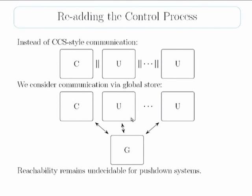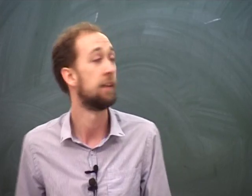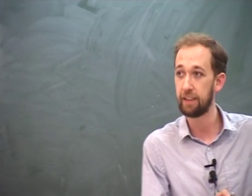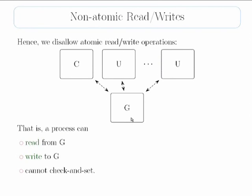I was interested in generalizing this further. In particular, the system loses the controller — so let's try to put the controller back. Also, the communication is by message passing, and I generally think in terms of global stores, so let's try putting a global store in too. At the moment, with a controller and users talking via a global store, we're still undecidable — because in the global store we can put locks. If someone wants to play the left tape, they set the lock, and similarly for the right. This is why I have the non-atomic restriction: someone can read from the store or set the lock, but they can't do a check-and-set atomically. In the case where read-write is non-atomic, we have decidability again in double exponential time.